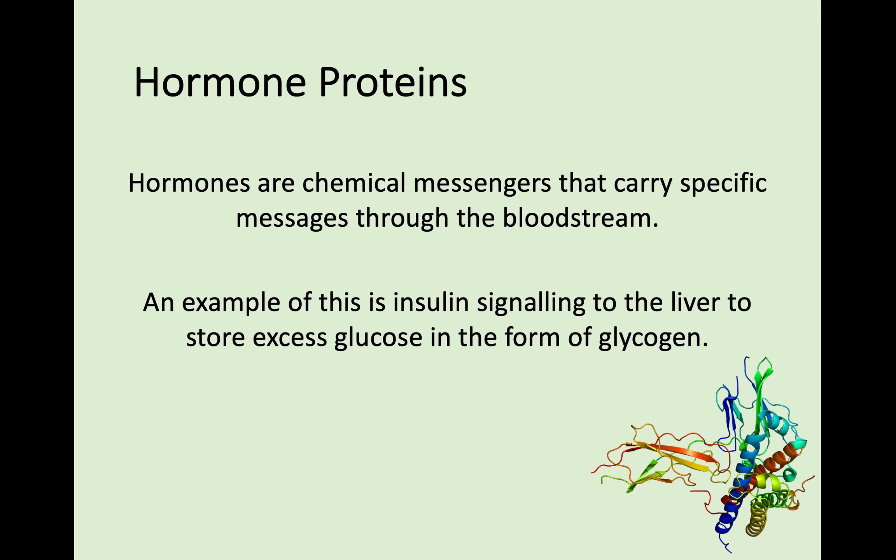Hormones are chemical messengers that carry specific messages through the bloodstream. An example of this is insulin — something we'll look at later in the course — which signals the liver to store excess glucose in the form of glycogen. We'll look at that in a bit more detail later.